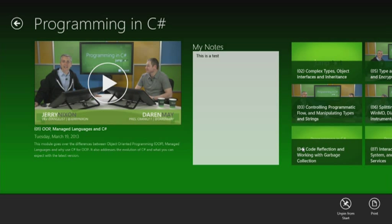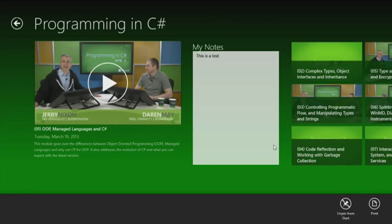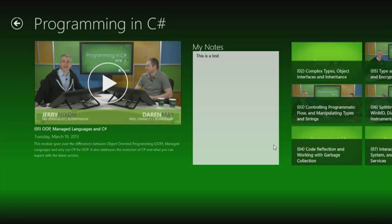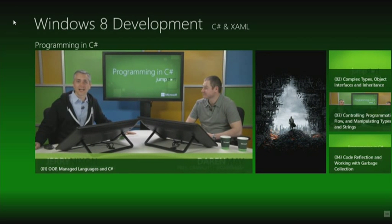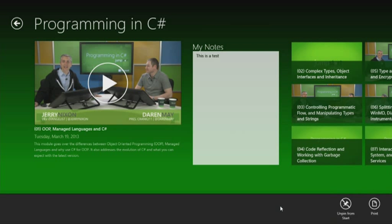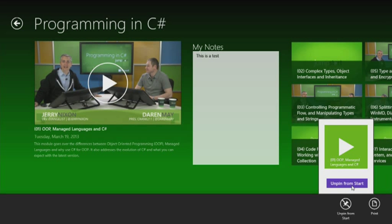Now if I click on the secondary tile, we come straight back into the application where we were. If I move back and come back to the start screen and click on it, it takes me straight back into that screen again — bypassing all the navigation. None of the extended splash is shown. But it's still got the back stack, so we can move back to the homepage. We've not broken the experience of the application. What we also see is we've detected that the state has changed and we actually have a secondary tile for this location — so now instead of showing 'pin', we show 'unpin'. I can ask if there is a secondary tile already there.